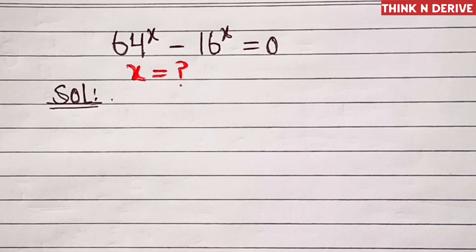Hi friends, let's discuss 64 power x minus 16 power x equal to 0 and we'll find the value of x. So let's start.